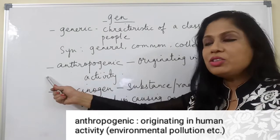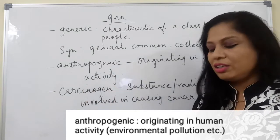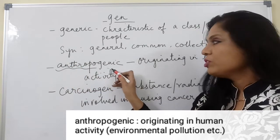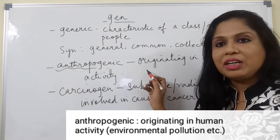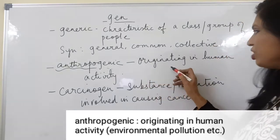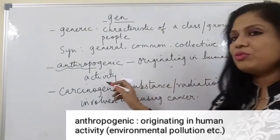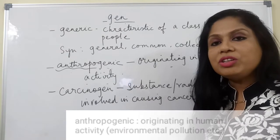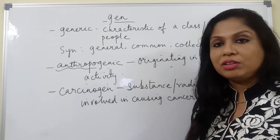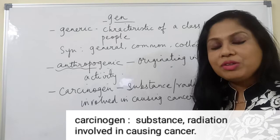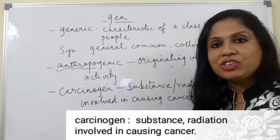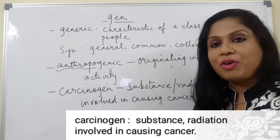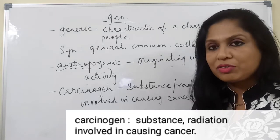The next word is anthropogenic. It contains the root word 'anthro,' so it means something which is originating in human activity — the contribution of man on earth. It is usually related to the damage that man has done to the environment in the form of pollution, etc.